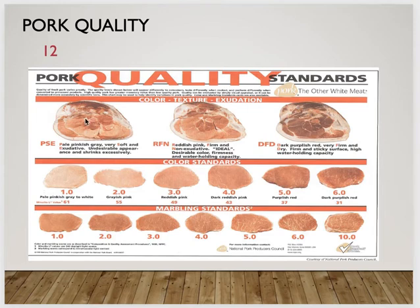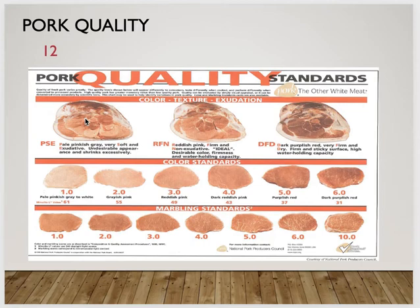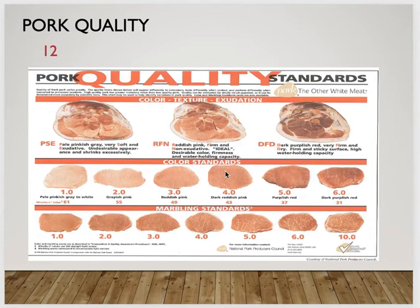PSE is very unacceptable for water holding capacity. Most pork products in the industry are pumped or injected — we use water, phosphates, nitrates, and similar agents to help preserve the product and extend shelf life, getting more product to the consumer at a more economical rate. Looking at our color standards: one is pale and bad — typically not used in the industry — and we go all the way to six, which is a dark purplish red. A score of 3.0 is ideal, and scores of two through five are generally acceptable.